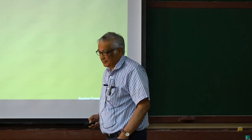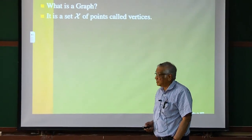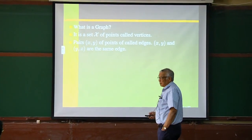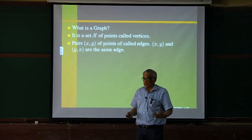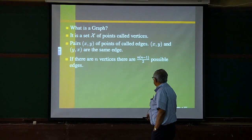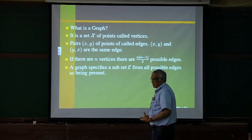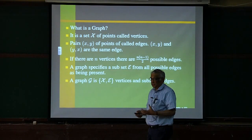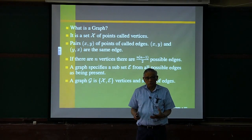So what's a graph? It consists of a set of points which we call vertices and pairs of points which we call edges. We don't distinguish between the pair XY and the pair YX, so it's not a directed graph — it's just the pair together that forms an edge. For N vertices there is a possibility of N(N−1)/2 possible edges. A graph specifies a subset of these edges as those that are present.